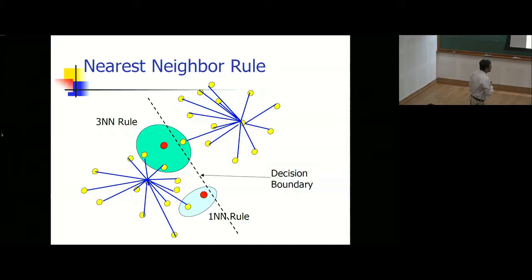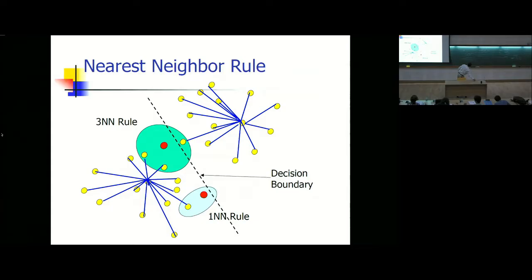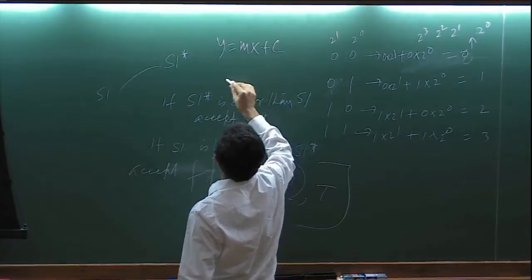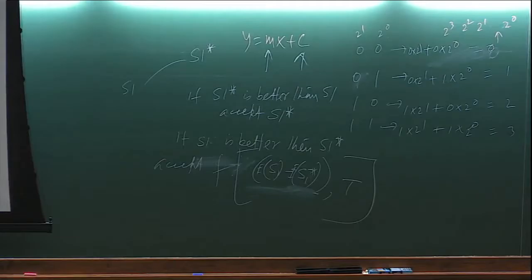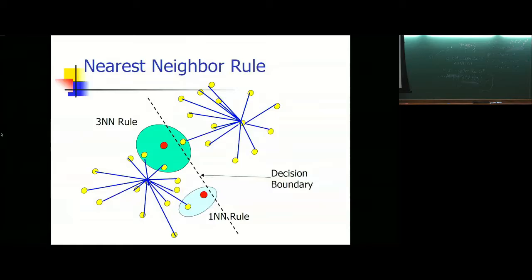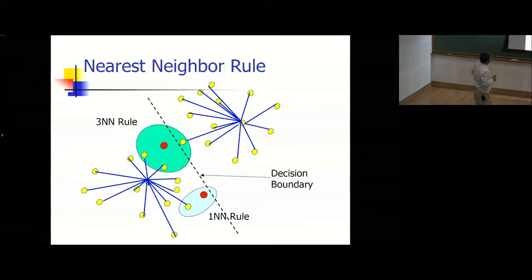You are trying to find a decision boundary. If you have one, you can tell which side is which class. For two dimensions, the easiest boundary is a line — y = mx + c. Given the training points, your goal is to find m and c.